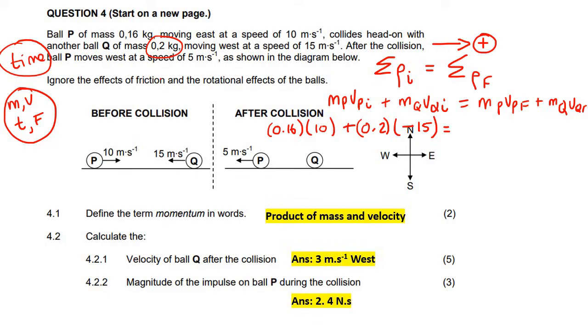Then we say equals. The mass of P is still 0.16. Its velocity final is 5, but it's going left, so we say minus 5. Then plus the mass of Q, which is still 0.2, and its final velocity we don't know. Don't even try to assume if it's going to be negative or positive. You always keep this variable as a positive value. I'm going to type the left-hand side in on the calculator quickly.